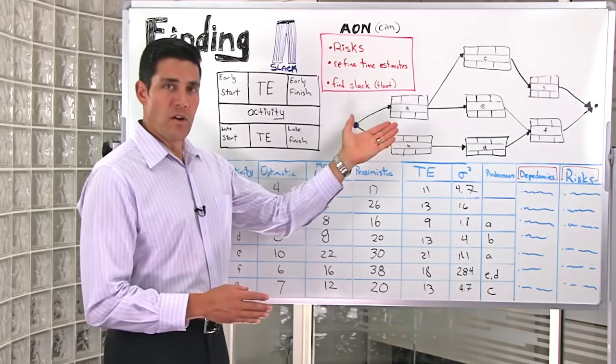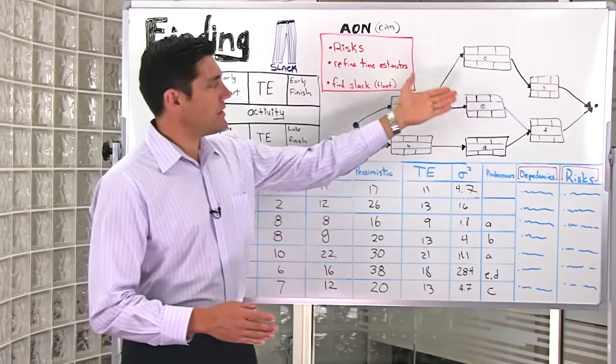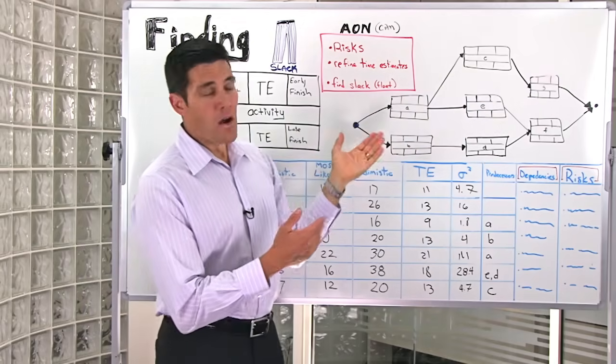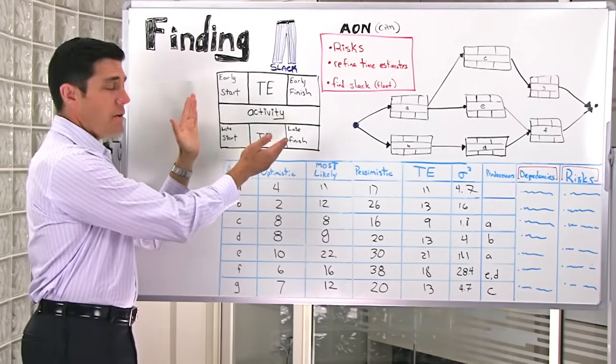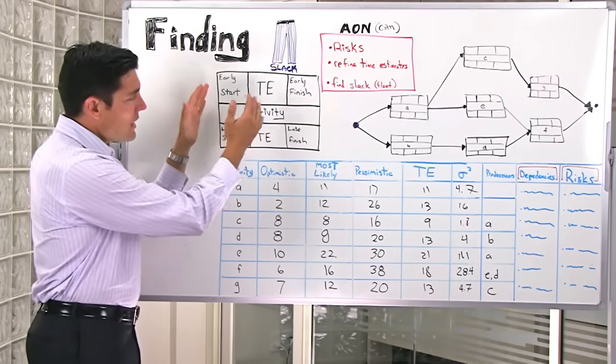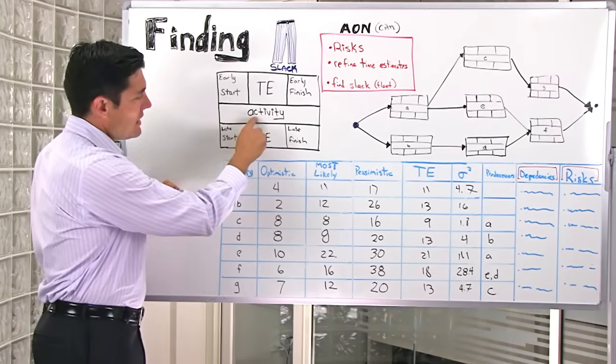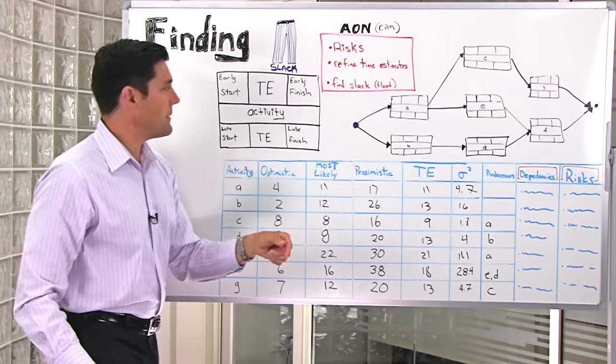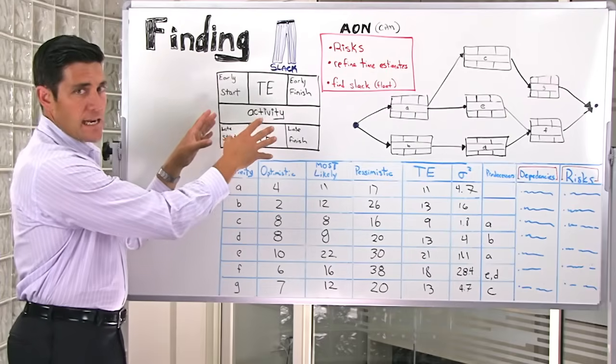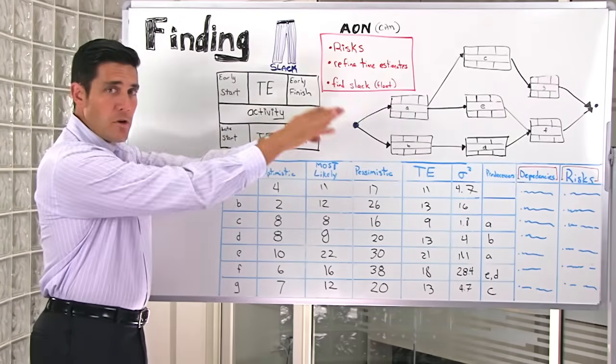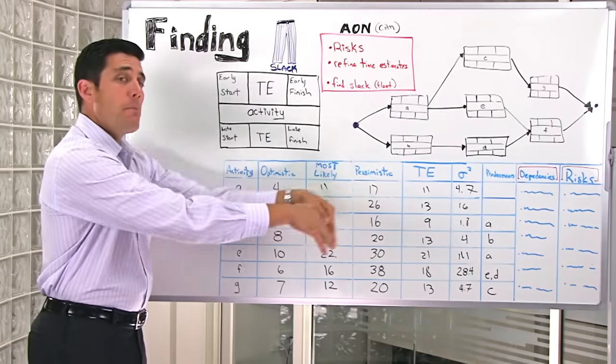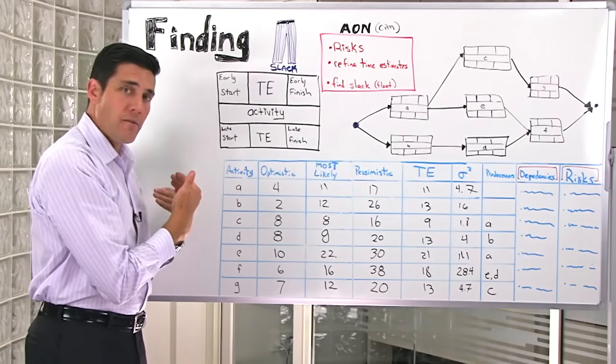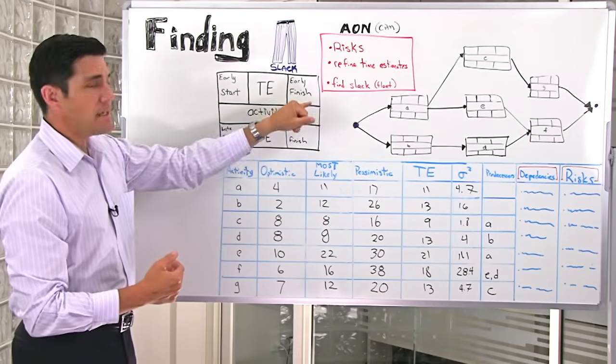In the Activity on the Node technique, each of these activities are designated on the Node. Each of the Nodes is broken down into various sectors. As the Node, we of course list the activity in the middle, as such A, B, C, D, E, F, and G. The six remaining sectors we fill in by doing a forward pass through the network and then a backward pass through the network to determine the float.